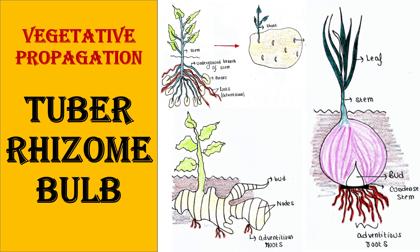Today we will talk about three types of vegetative propagation: tuber, rhizome, and bulb. If you are new to my channel, please subscribe, and if you like my video, please like, comment, and share.